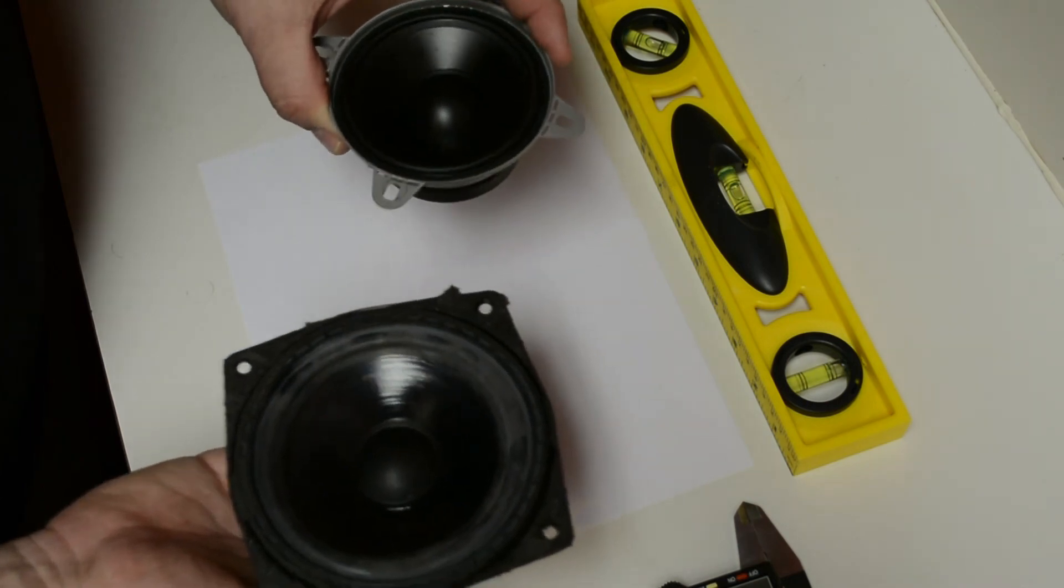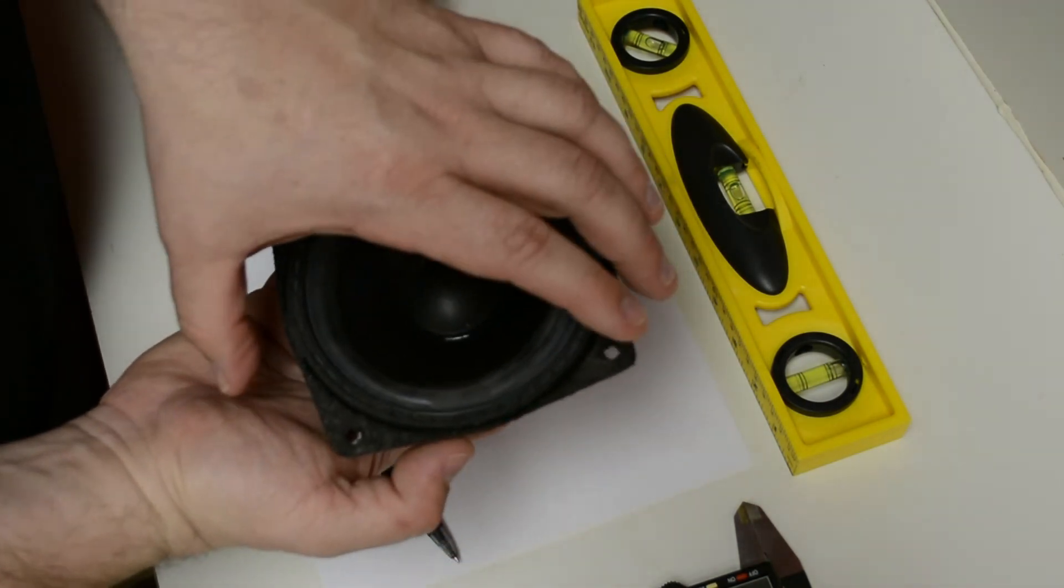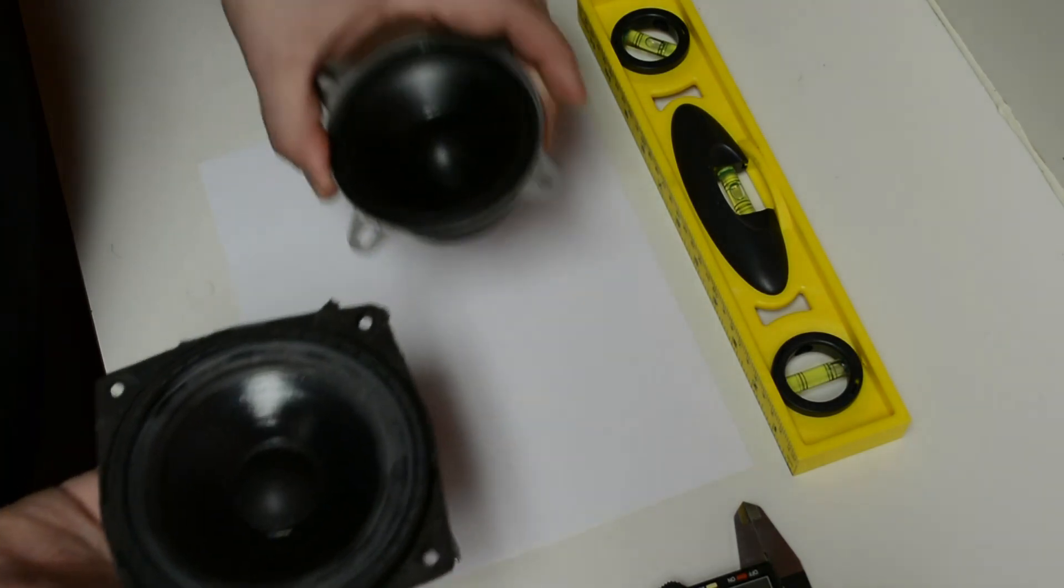As you can see, the two speakers are different sizes. So what we're going to need to do is make an adapter ring that will go from this size speaker to this size speaker.